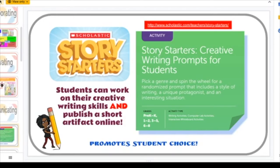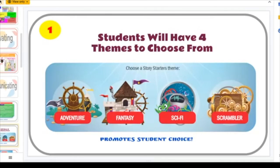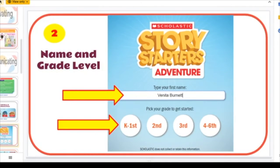Story Starters by Scholastic is where students can work on creative writing skills and publish a short artifact online. It has a lot of student choice. Students pick a genre, spin the wheel for a randomized prompt that introduces a style of writing, a unique protagonist, and an interesting situation. First, students choose from four themes: adventure, fantasy, sci-fi, or scrambler. Then they enter their name and grade level — importantly, this does not save any work at all.